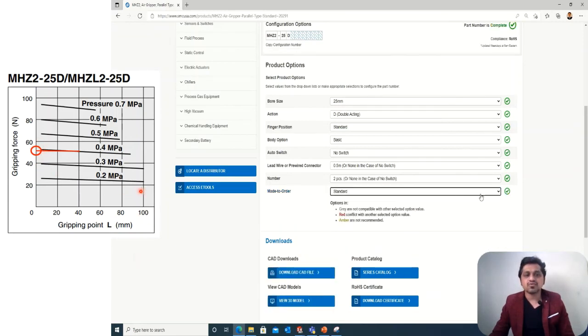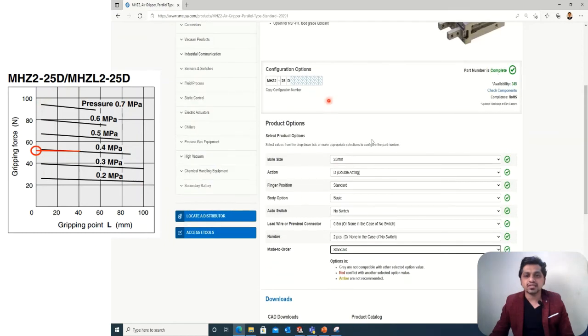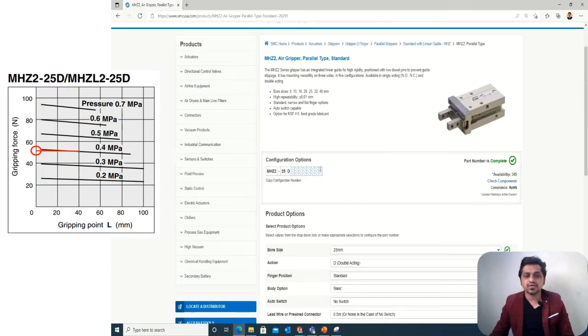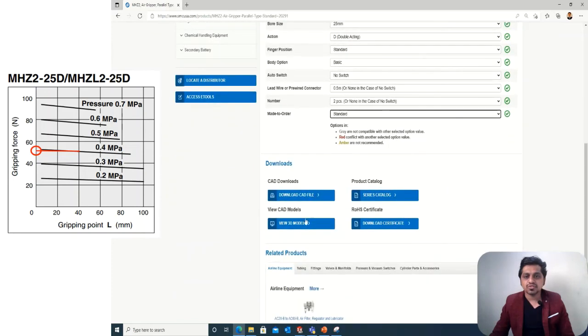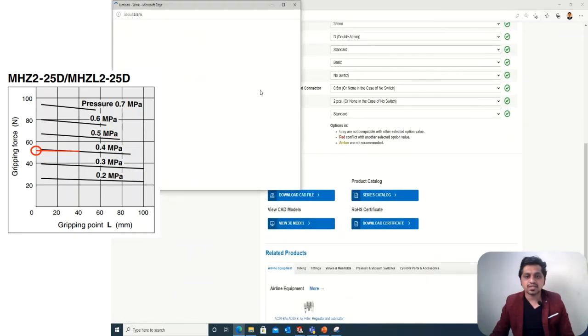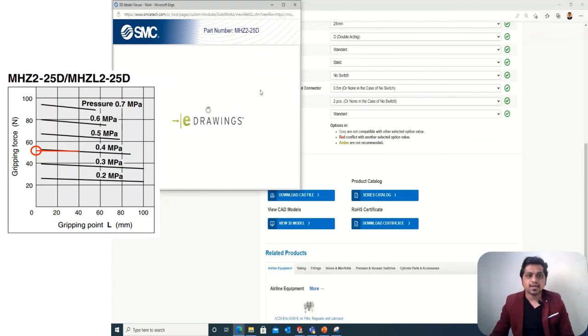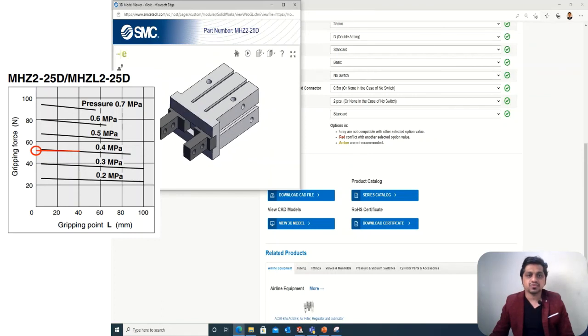Here we've completed our inputs. Let's see how my part looks like. It will take some time for loading. Here is my gripper - you can see the fingers.